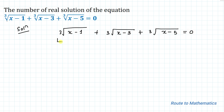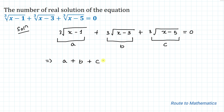In the next step, let's take this first term as a, this term as b, and the last term as c. So what we get is a plus b plus c equals to 0. Here we can apply the condition: when a plus b plus c equals to 0, then a cube plus b cube plus c cube equals to 3abc.